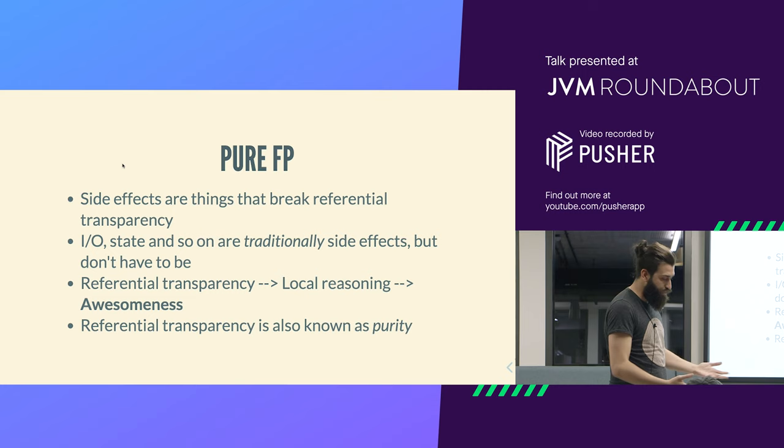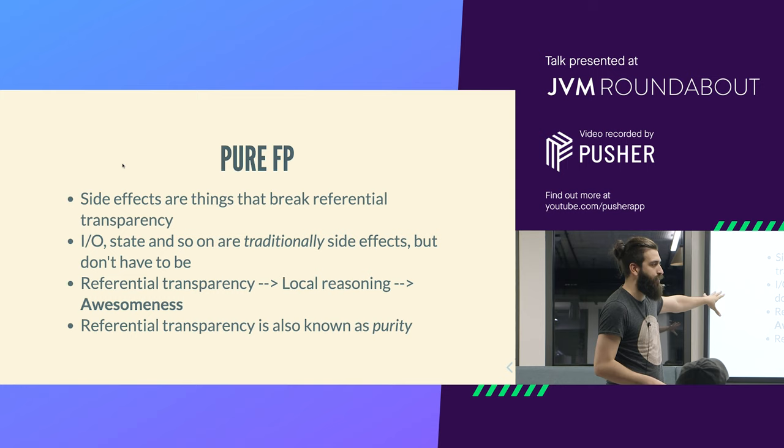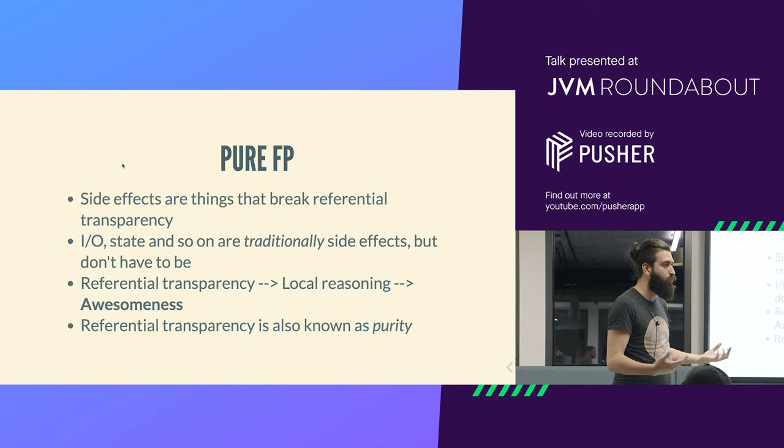Referential transparency is also known as purity. I actually don't really like the name purity, because you get this sort of moral quality between the pure code and the impure, sinful ones. But actually that's it - there's nothing more than that. It's a syntactical property which gives you certain semantical properties that you then care about.